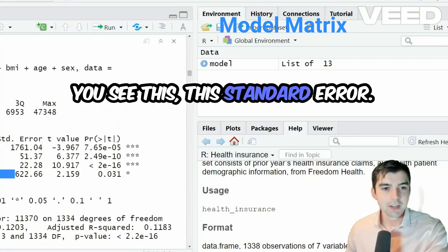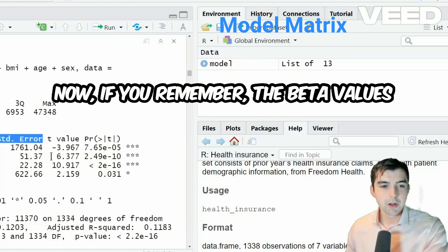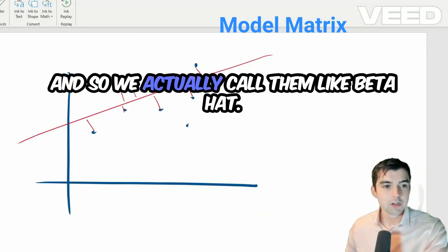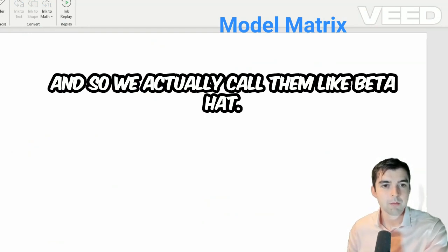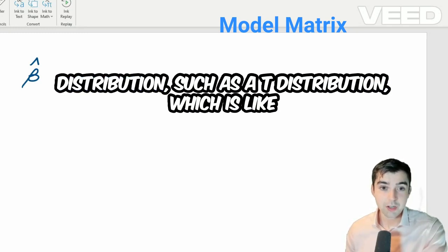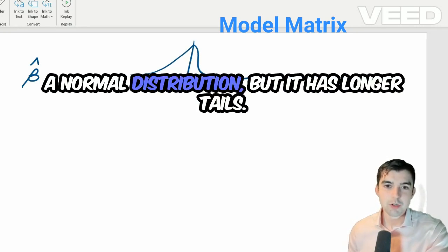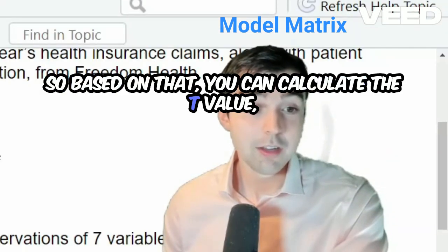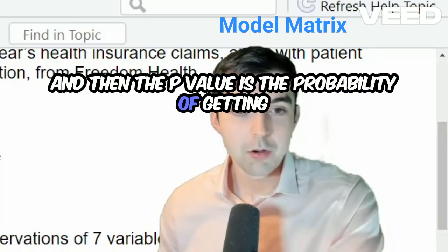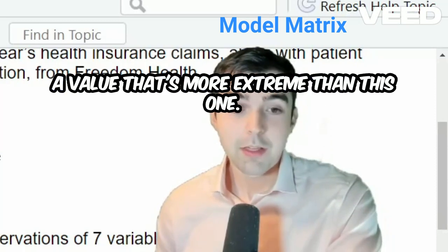You see this standard error. Now, if you remember, the beta values that we're working with are actually estimates. And so we actually call them beta hat. And we'll say that this comes from a particular distribution, such as a t distribution, which is like a normal distribution, but it has longer tails. So based on that, you can calculate the t value. And then the p value is the probability of getting a value that's more extreme than this one.